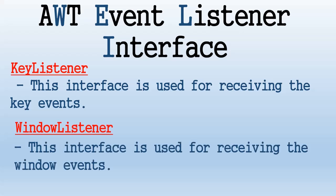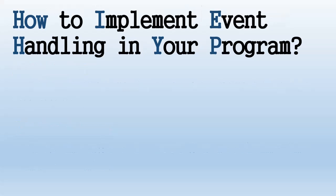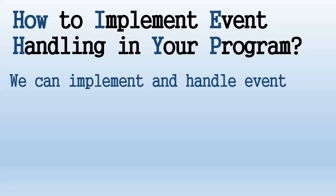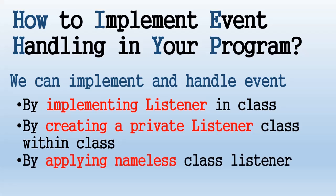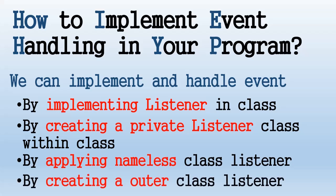WindowListener is used for receiving window events and defines methods that handle window events, including events for opening and closing the window, activation and deactivation of the window, and iconification and deiconification of the window. We can implement and handle events by implementing a listener in the class, by creating a private listener in the class, by applying a nameless class listener, or by creating an outer class listener.